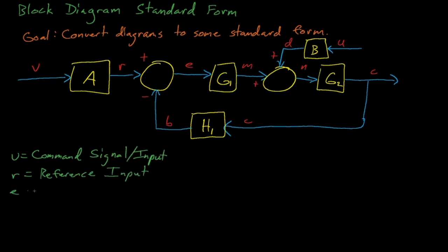There it is combined with the signal B which has been passed through a feedback element H1. After going through the comparator, the signal is acted on by a control element G1.